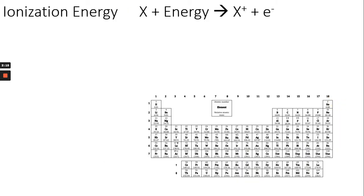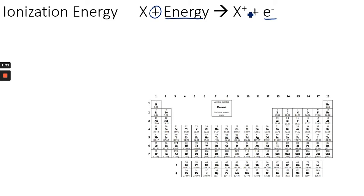Ionization energy tells us the amount of energy needed to lose an electron. It's the energy the atom is gaining to lose an electron, and when you lose an electron you form a positive charge — that's where the positive charge on our atom comes from.